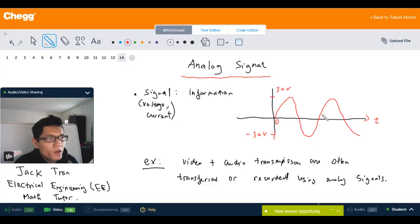It can be thought of as a sine wave, and the maximum voltage of the signal is 30 volts, and the minimum is negative 30 volts.